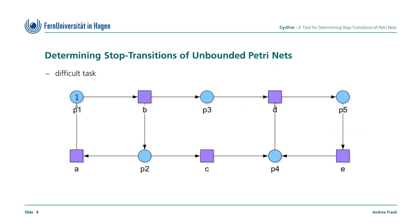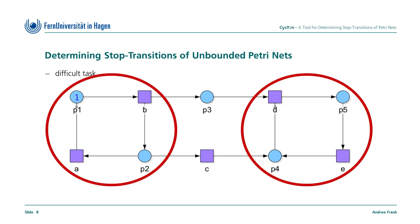But deciding whether or not a transition of an unbounded net is a stop transition is the more difficult task. Let's take a look at this unbounded Petri Net. The net has two cycles, this one and this one. These two cycles look the same at first sight, but the behavior of the two cycles is apparently different. Let's take a closer look at this.